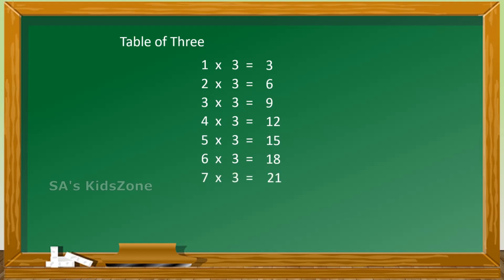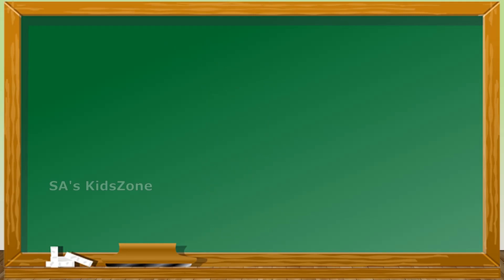8 threes are 24, 9 threes are 27, 10 threes are 30. The next is table of 4.